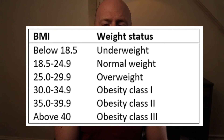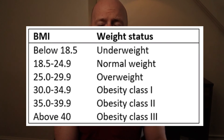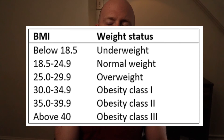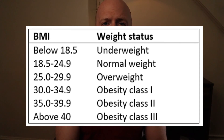Under 18.5: underweight. 18.5 to 24.9: normal weight. 25 to 29.9: overweight. 30 plus: obese.